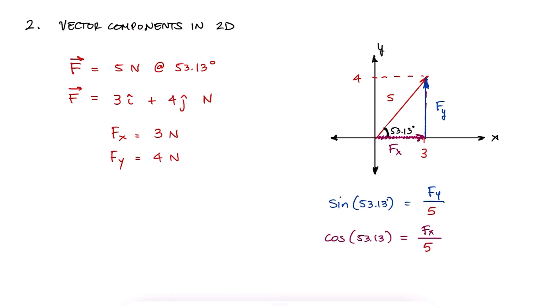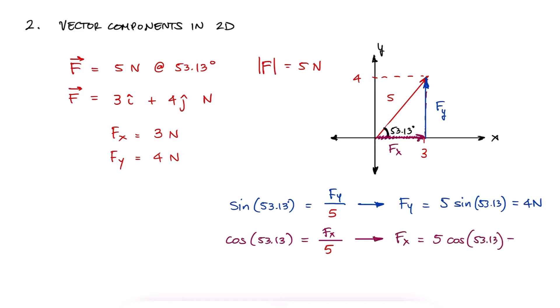If in this case sine of 53.13 is fy over the magnitude of f, and cosine of 53.13 is fx over the magnitude of f, then fy is f sine of 53.13, and fx is f cosine of 53.13.